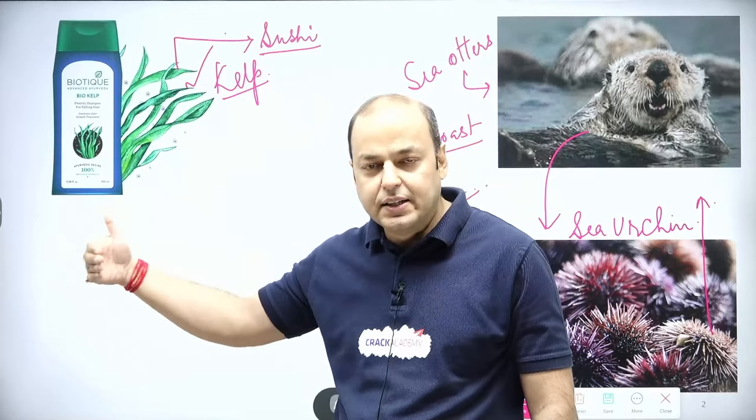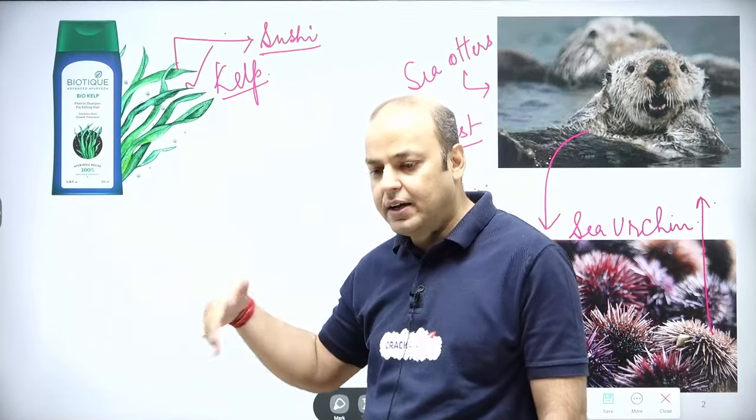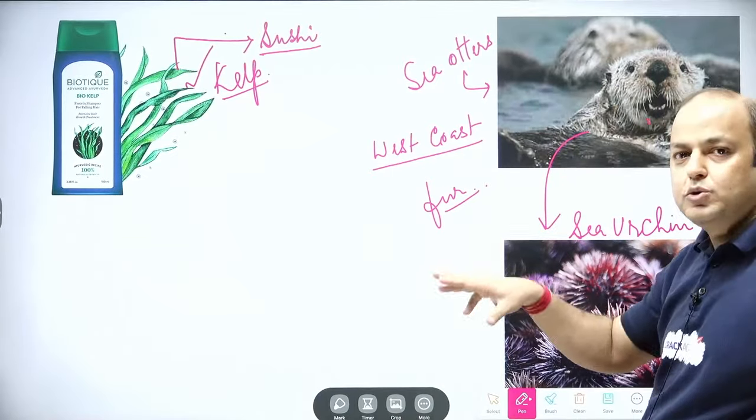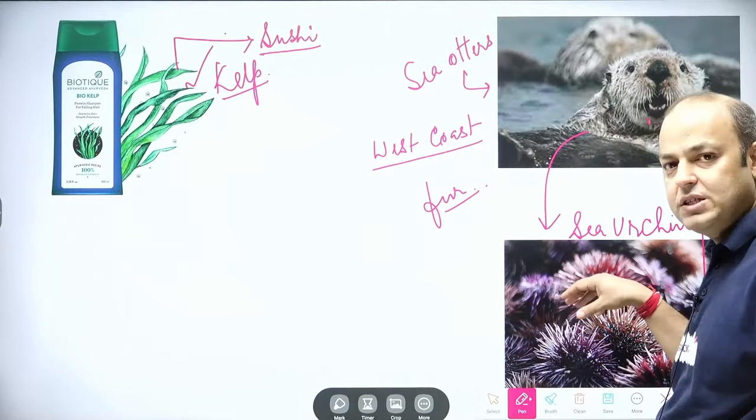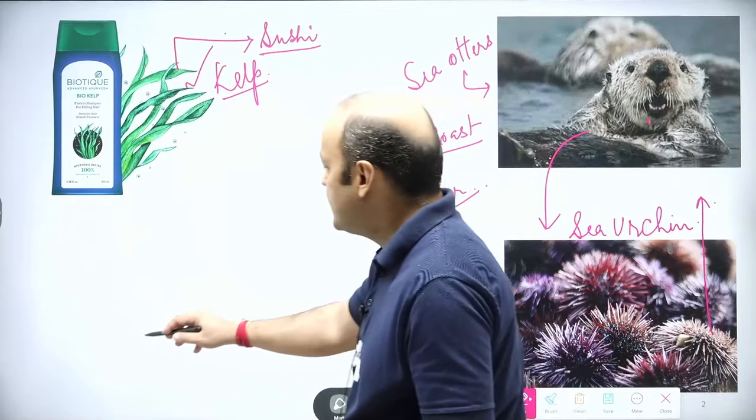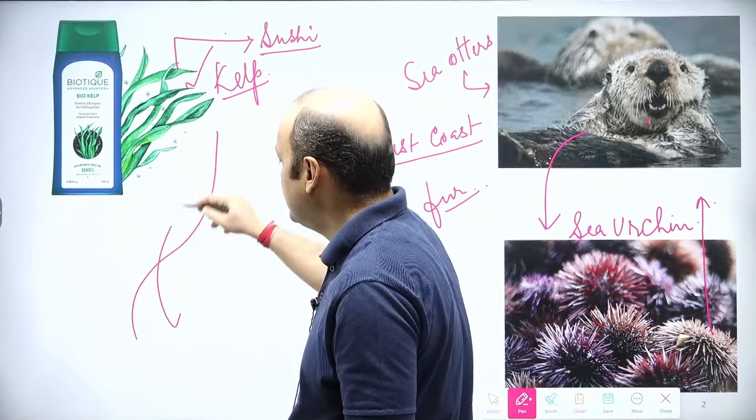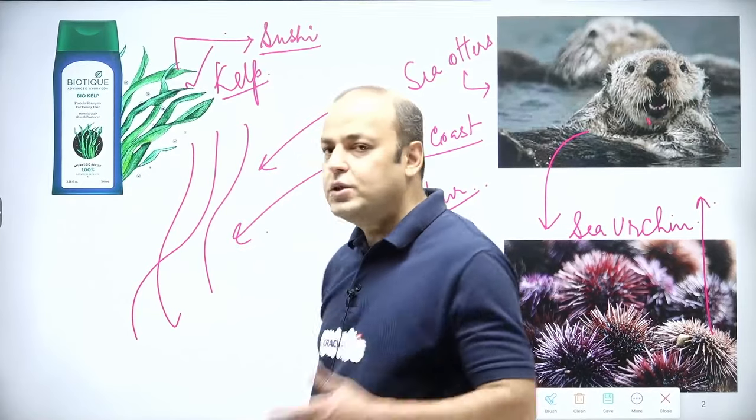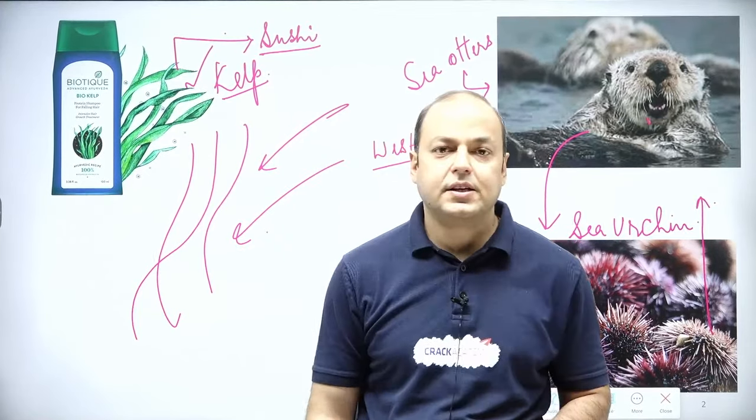So in this particular case study, I have discussed it at length, where again the sea otters were introduced, they again started feeding on sea urchin. Kelp forest got a chance to grow again, all the lost species came back. So these kinds of species are known as keystone species.